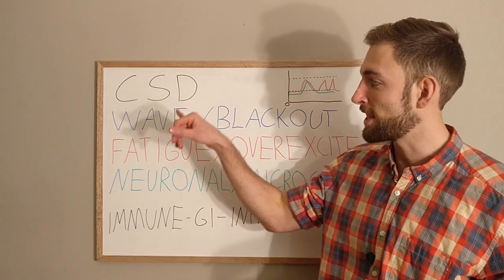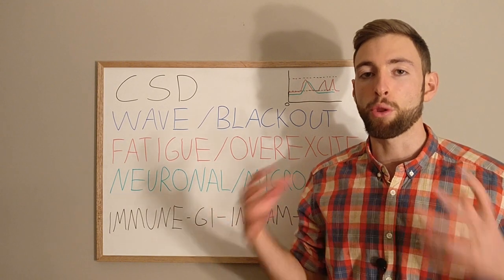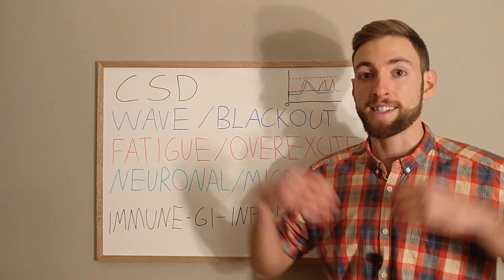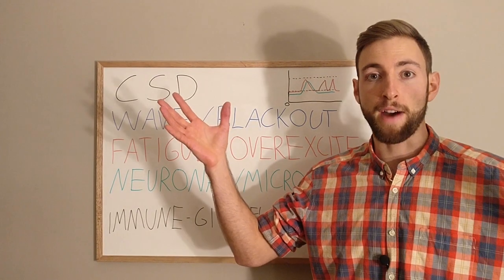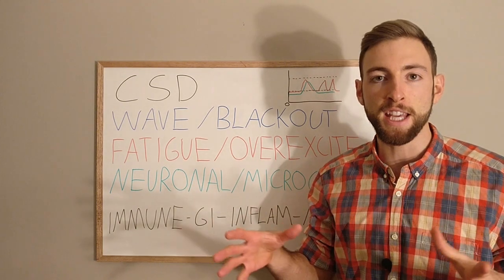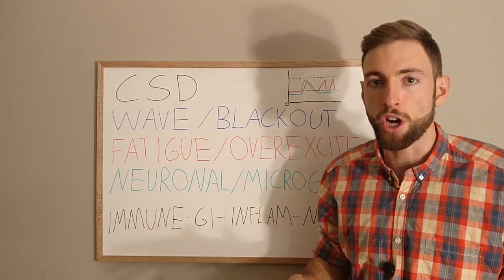And what happens is that basically our brain is going through a wave of depolarization. But simply, we can understand that as a wave of excitation where all our neurons are firing and then followed by a wave of almost like fatigue or blackout where the neurons go dark, all activity goes dark.